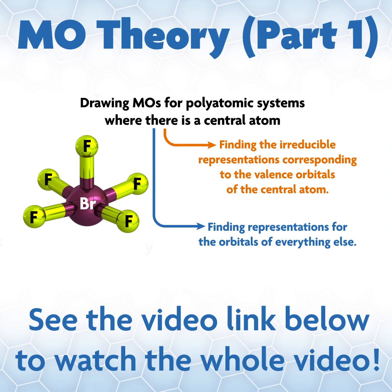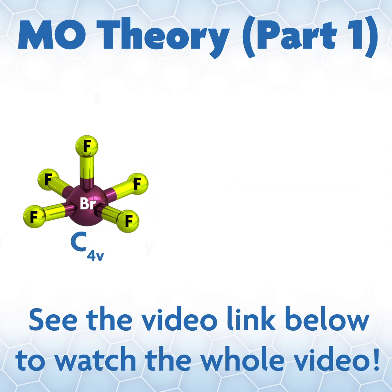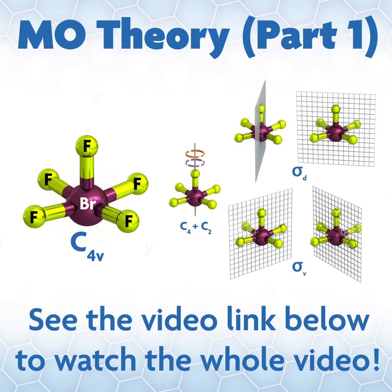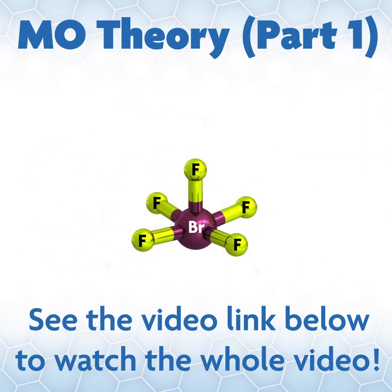If you have a system with a central atom, then that central atom will sit on the point that all your symmetry operations go through. For example, bromine pentafluoride is C4V with C4 axes, a C2, two σd's, and two σv planes, and all those symmetry operations go through the bromine. Using our BrF5 example, we will write out the molecule with appropriate axes. As discussed in the group theory video, the principal rotation axis is almost always the highest order rotation axis, which we'll call Z.